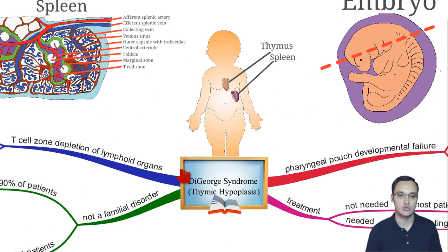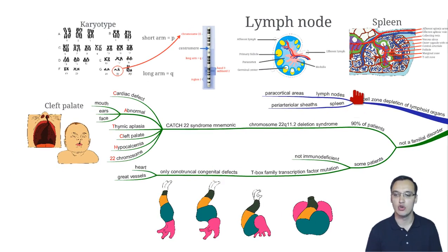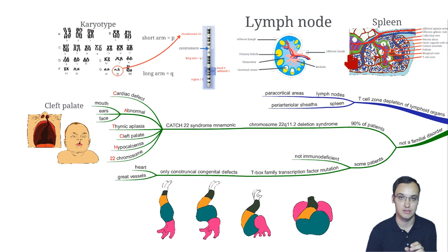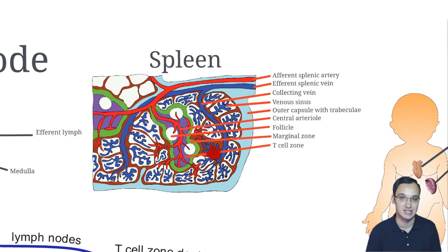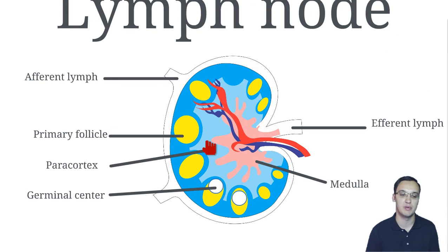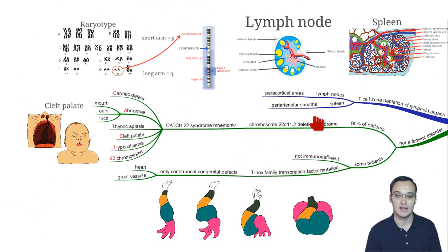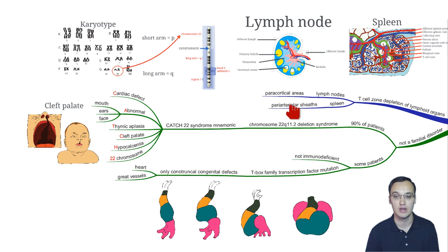The morphology of DiGeorge syndrome is as follows. The lymphoid organs — lymph node and spleen — have zones where you normally have many T cells. In the spleen, this zone is represented as a purple color next to the artery, the peri-arterial sheet, and it will be depleted because we don't have a thymus and therefore no T cells. In the lymph node, the depletion occurs in the paracortex, because T lymphocytes are normally located there in the paracortical areas.